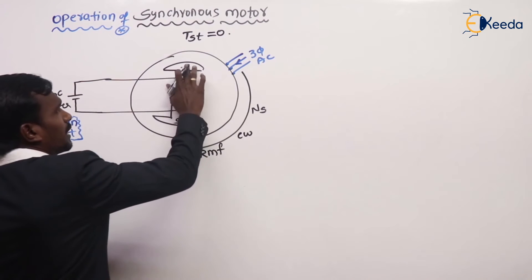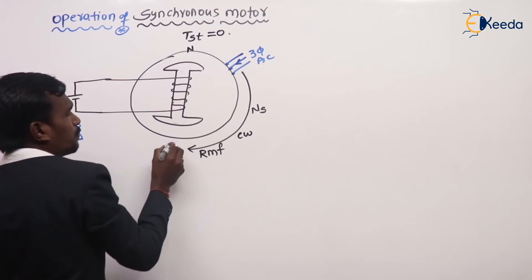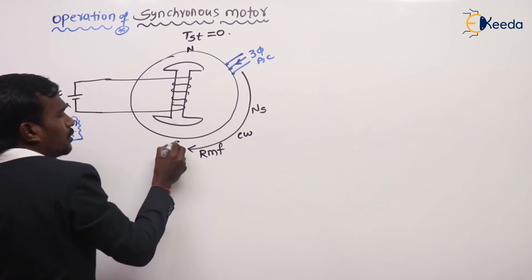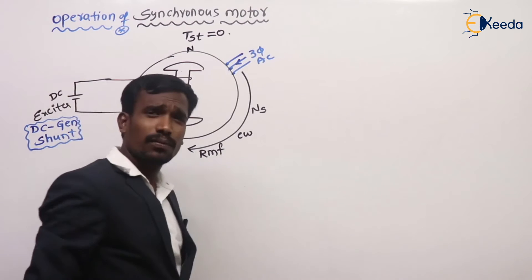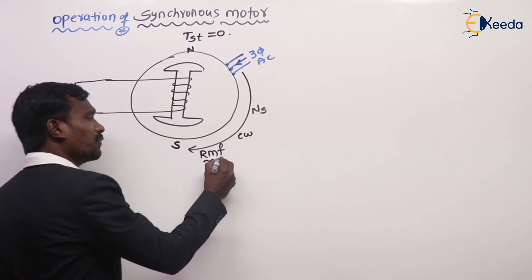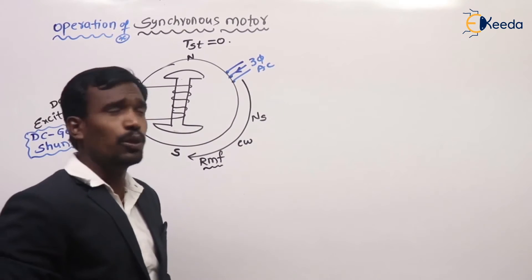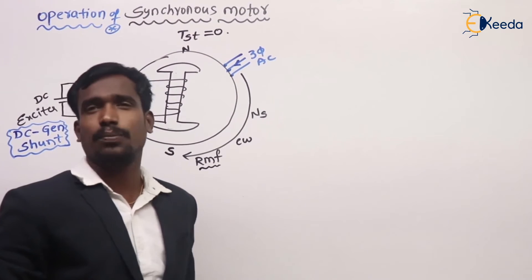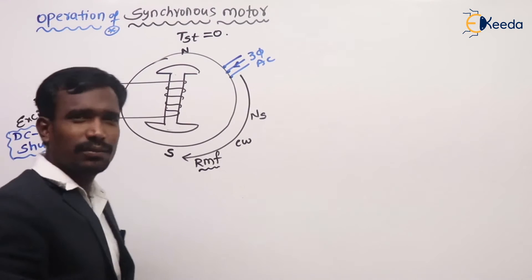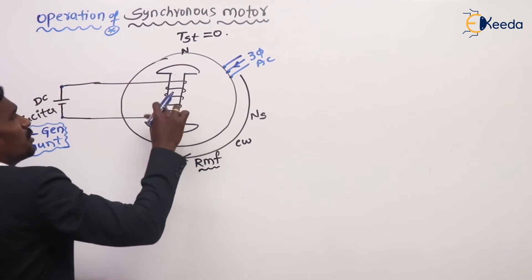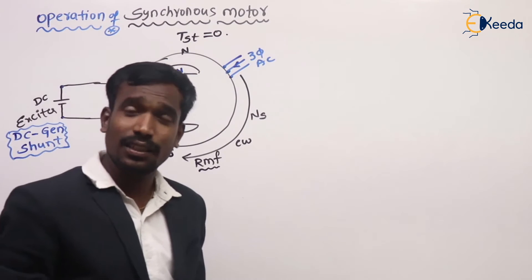For example, in this case, poles are created — a north pole and a south pole — which rotate in the clockwise direction at synchronous speed. First, three-phase AC supply is given to the armature, producing a rotating magnetic field with north and south poles rotating clockwise at synchronous speed. Then DC excitation is given to the field winding. When excitation is given to the field winding, poles are also created in the rotor.